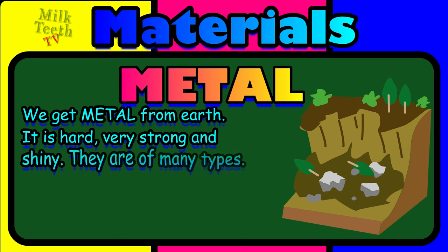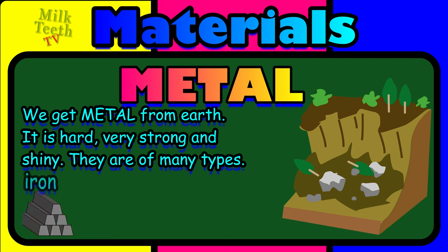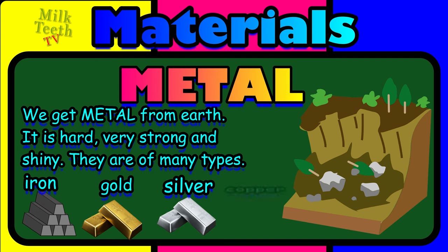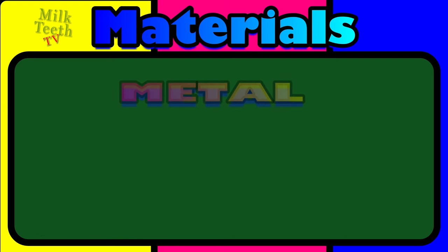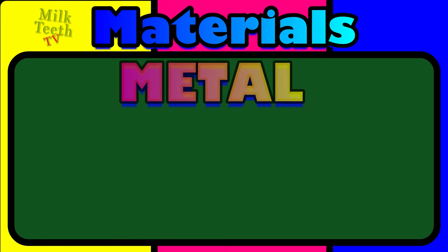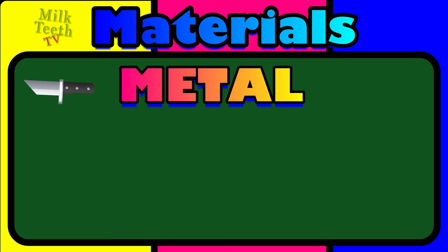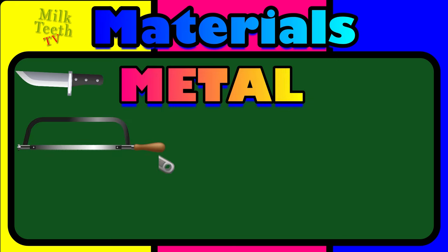The second type of material is metal. We get metal from the earth. It is hard, very strong, and shiny. There are many types of metals — for example, iron, gold, silver, and copper. Now can you think of some things that are made of metal around us? A knife, a saw, a wrench.